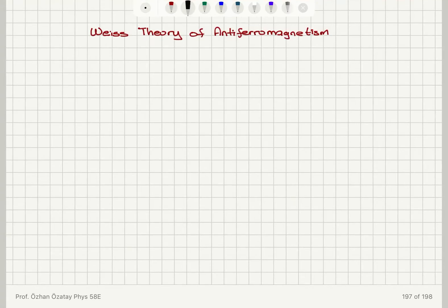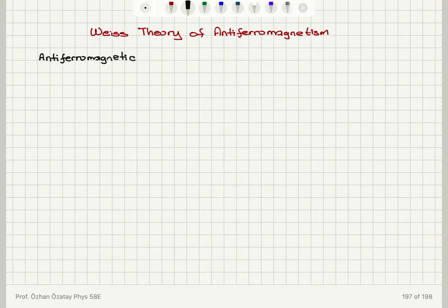We will talk about the basis for the Curie-Weiss law for antiferromagnets. First, let's remember what that is and how it applies to this case. We need to recall that antiferromagnetism is mostly present in ionic salts, so antiferromagnetic materials are mostly ionic salts, and these have localized moments.